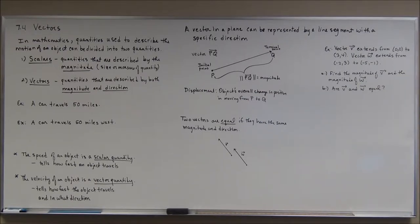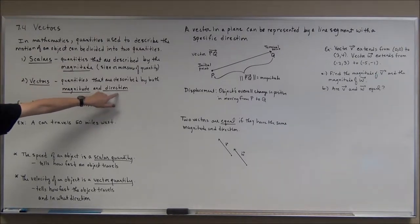In mathematics, quantities used to describe the motion of an object are typically divided into two quantities: scalars and vectors. Scalars are constants - quantities that describe a magnitude, the size or measure of the quantity itself. Vectors have two things: they are quantities described by both magnitude and direction. You have to have both parts for it to be a vector.